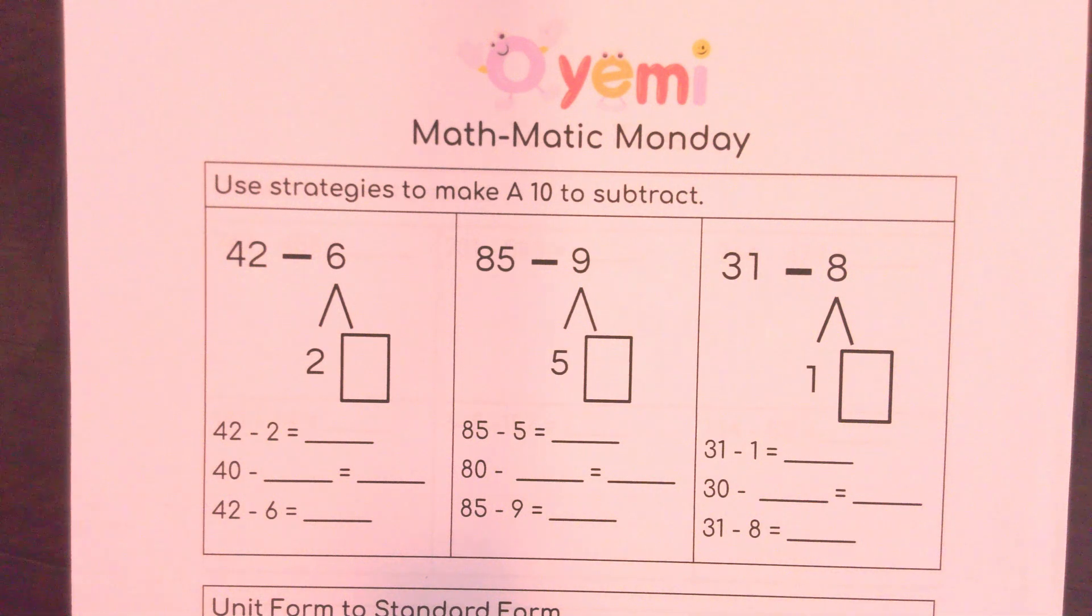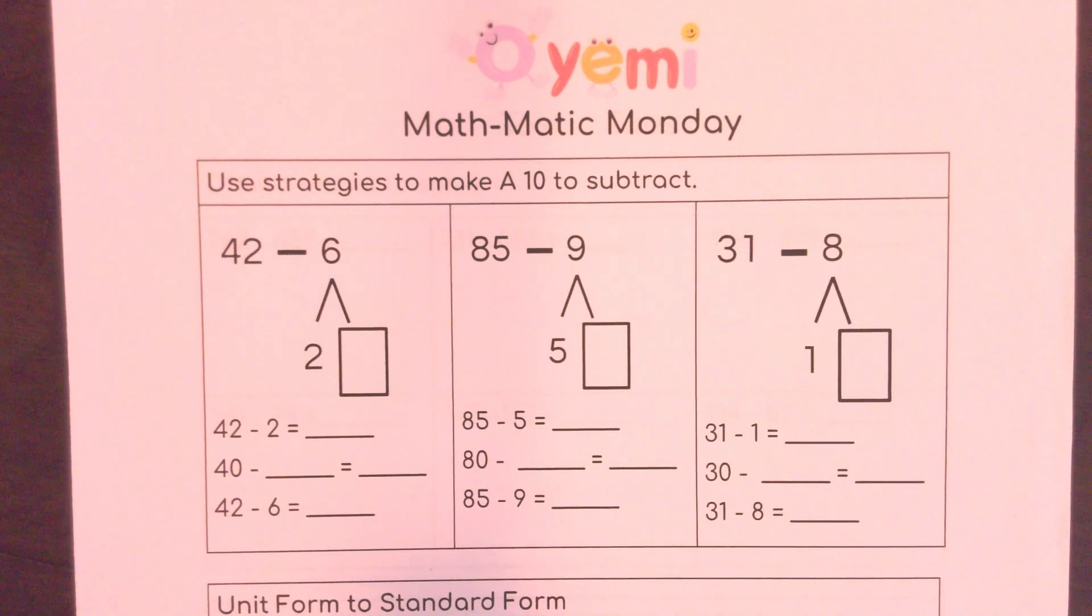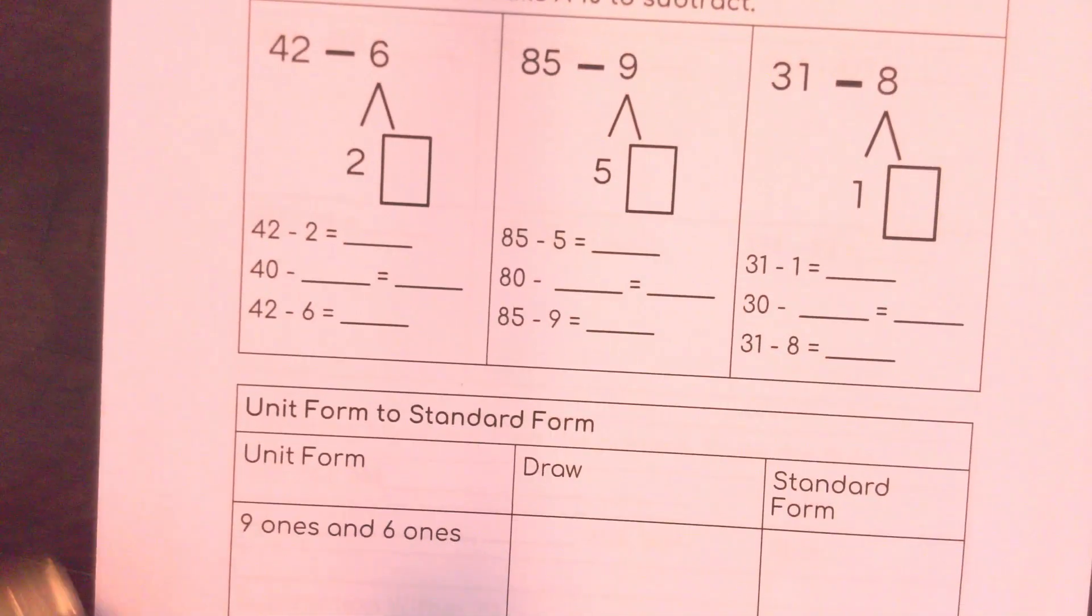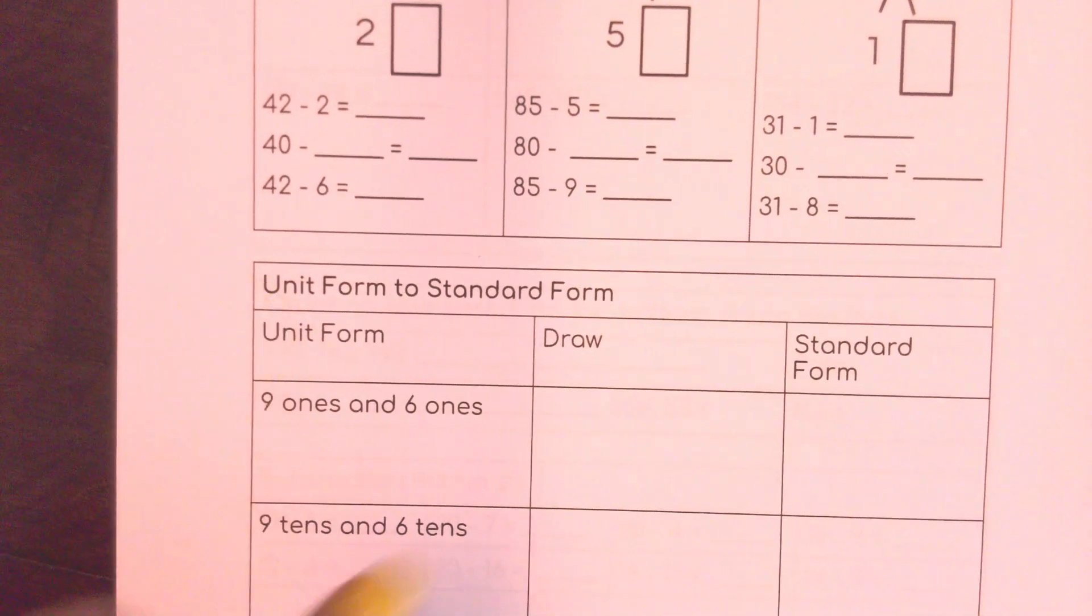Welcome to another Mathematic Monday. We're in week 9 of learning. We are going to start off by using a strategy to make a 10, but this time we're going to do it while we're subtracting. Then we're going to take some numbers that are in unit form and try to get them to standard form. And then we're going to subtract within 20.